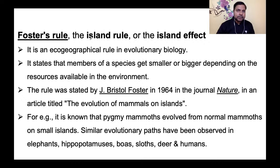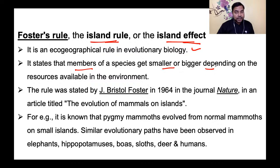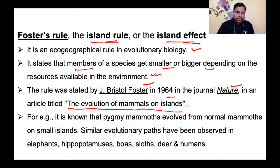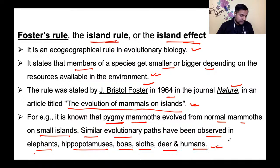Next is Foster's rule — also called the island rule or island effect। This eco-geographical rule of evolutionary biology states that members of a species get smaller or bigger depending on the resources available in the environment। Published by J. Bristol Foster in Nature journal with the title 'The Evolution of Mammals on Islands'। For example, pygmy mammoths evolved from normal mammoths on small islands। Similar evolutionary paths have been observed in elephants, hippopotamus, boas, sloths, deer, and humans।